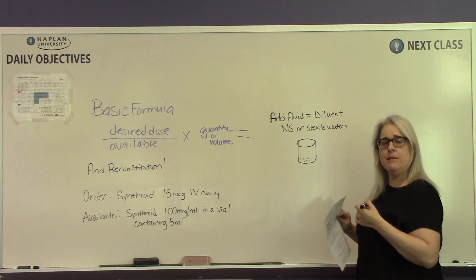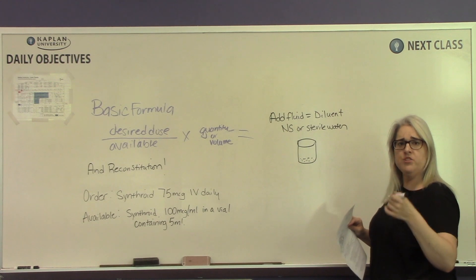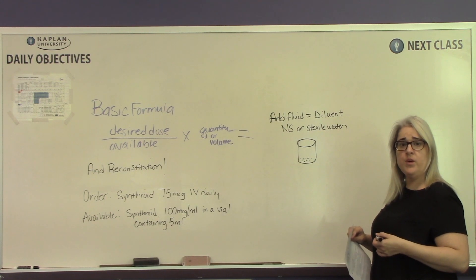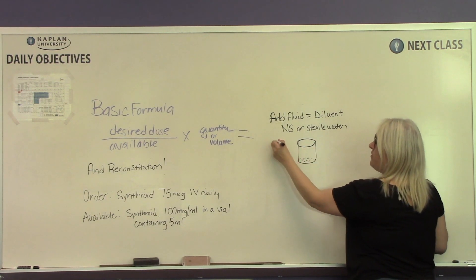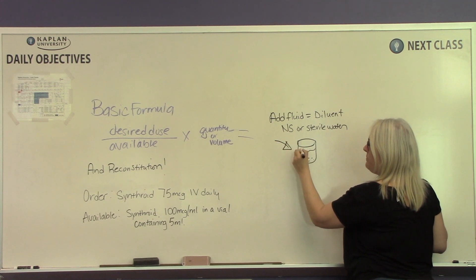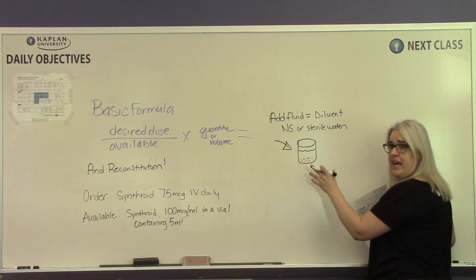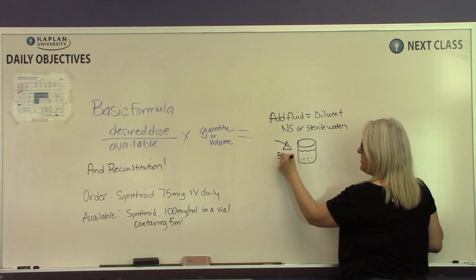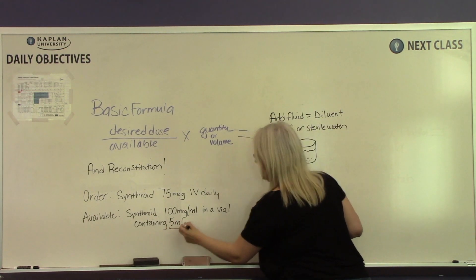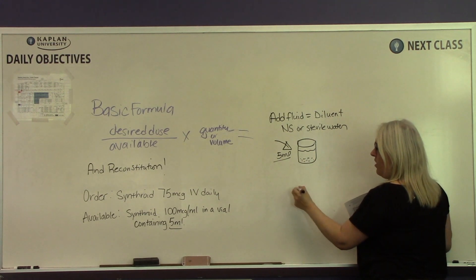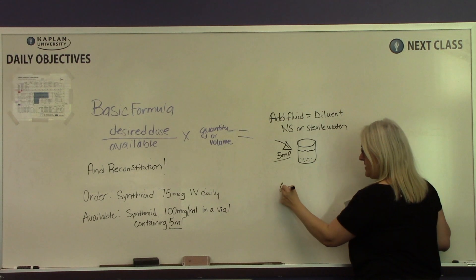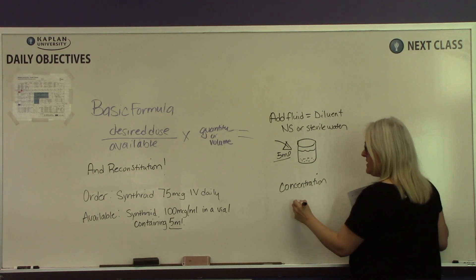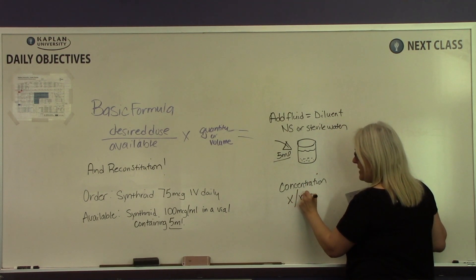Directly on the label of the vial, it will tell us how much dilutant to add based on what concentration we want in the vial. The dilutant is the amount of liquid we are adding to the powder to mix it up so that we now have a solution. Once you add in the specified volume — in this problem, 5 milliliters — you mix it up, and the label tells you the resulting concentration, which is how much drug is in how many milliliters.